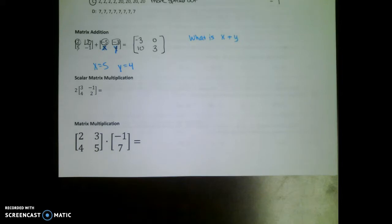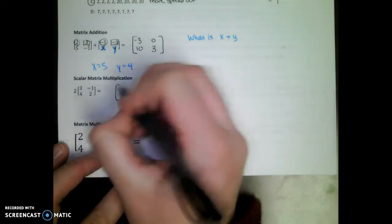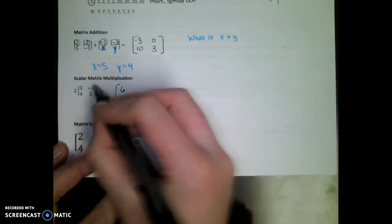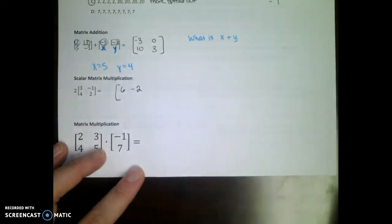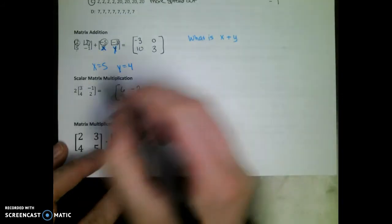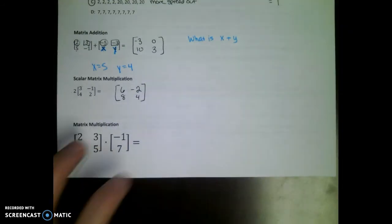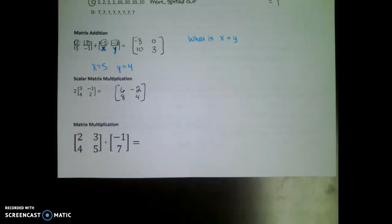Scalar matrix multiplication is basically a beefed up distributive property. So what do you think we're going to do with that two that's outside of the matrix? We're going to multiply everything in the matrix by two. So two times three is six, two times negative one is negative two, two times four is eight, and two times two is four. Okay. Turn in your packet to the very back. We're going to look at number 17 together.